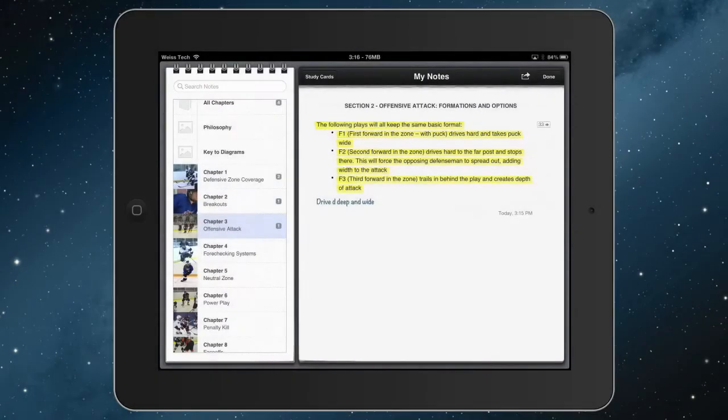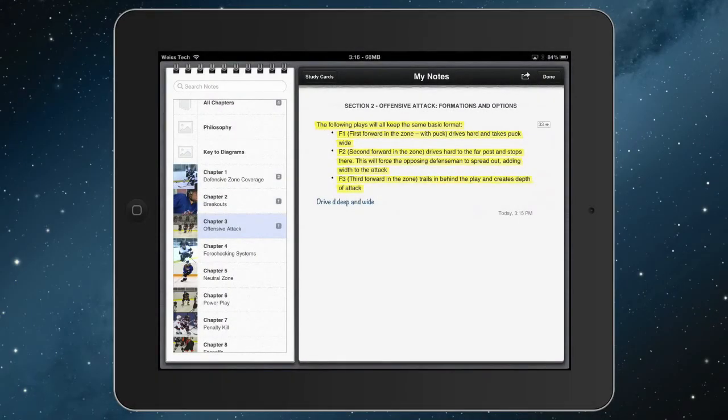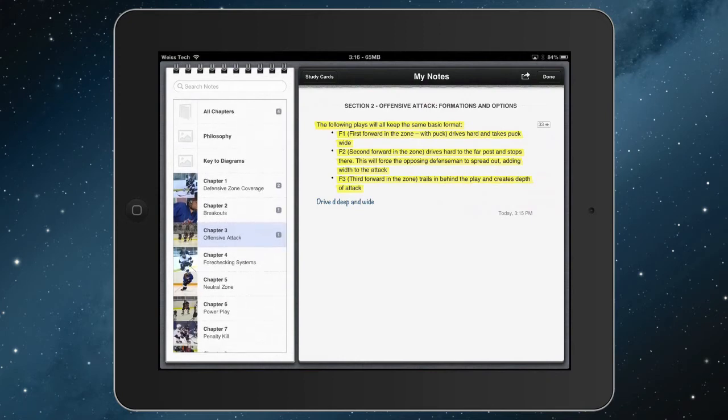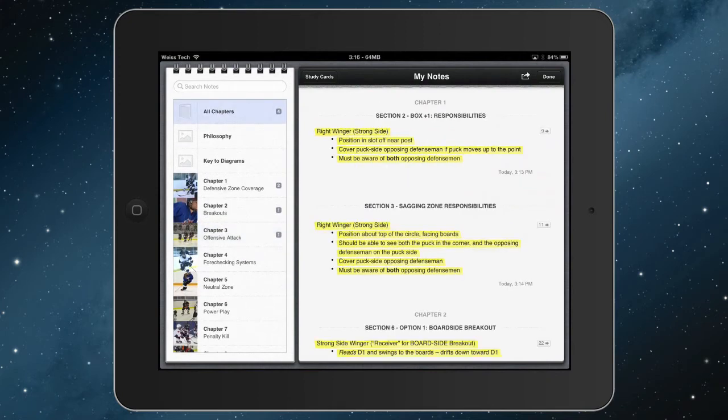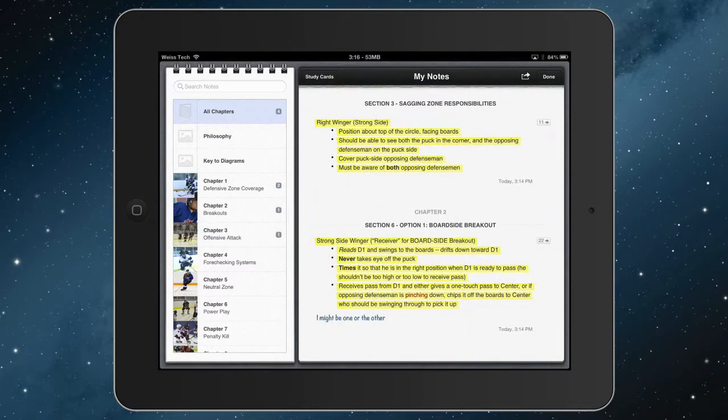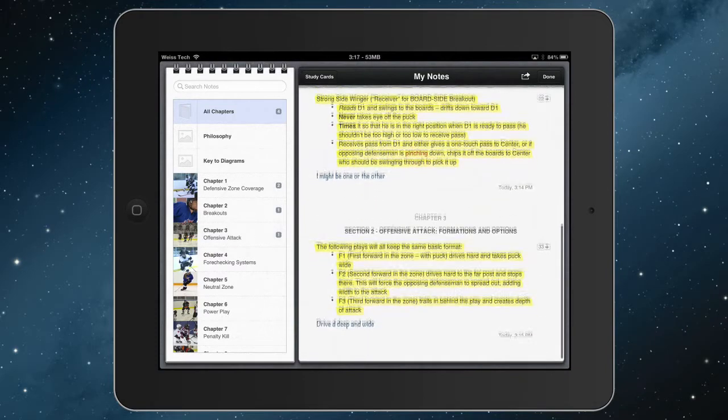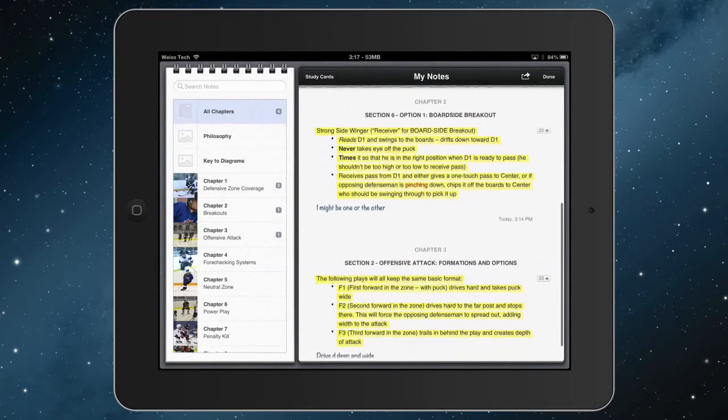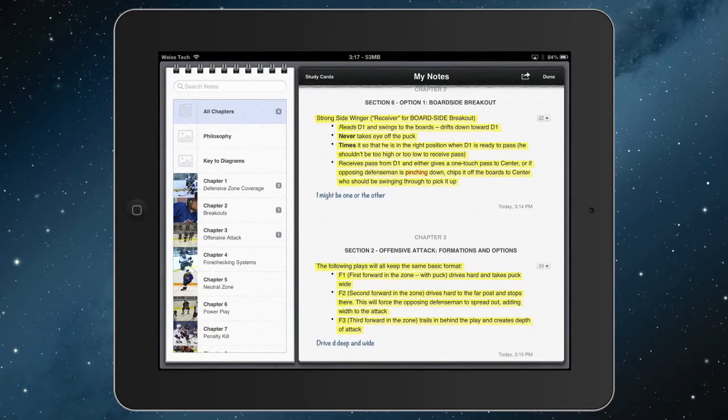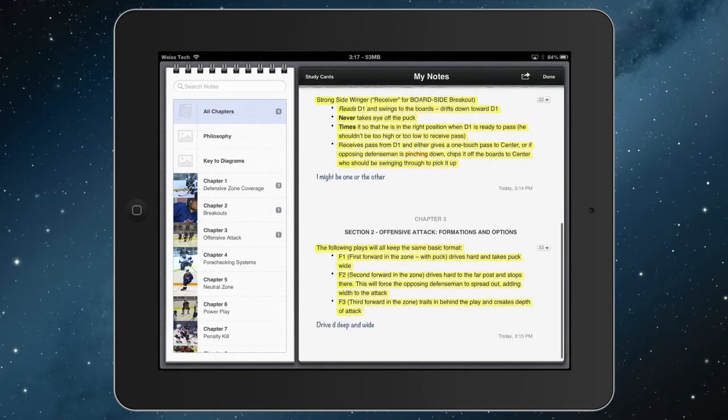Okay. And you can see it clicks me over into a different looking view. And here I've got all my notes. I can see them all at once. If I click all chapters it sorts them out by chapter. So in chapter one, I have notes in section two, section three in chapter two, I have a note in section six, or sorry, a highlight in section six. And then chapter three, I have a highlight in section two. And then any of my notes pulls them in there with me.